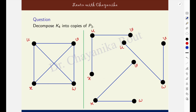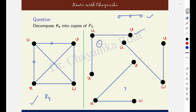Now decompose K4 into copies of P3. K4 is the complete graph on four vertices, and P3 is the path on three vertices. In the first copy I take edges UX and UV; in the second copy two more edges forming a P3; and in the third copy the remaining two edges. Every edge is marked and covered exactly once — this is the decomposition of K4 into copies of P3.